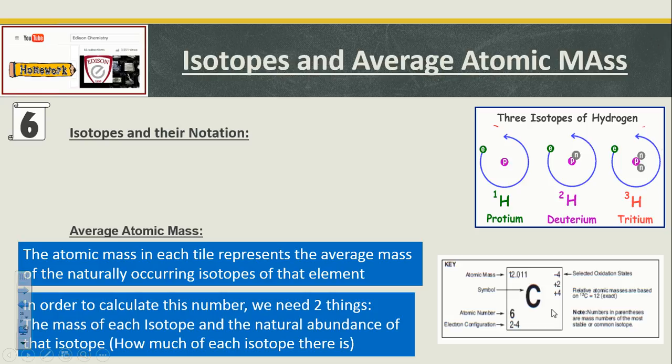In order to calculate that atomic mass, we need two things. We need to know the mass of each isotope that exists and the natural abundance of said isotope, so how much there are. And we look at those as percentages.